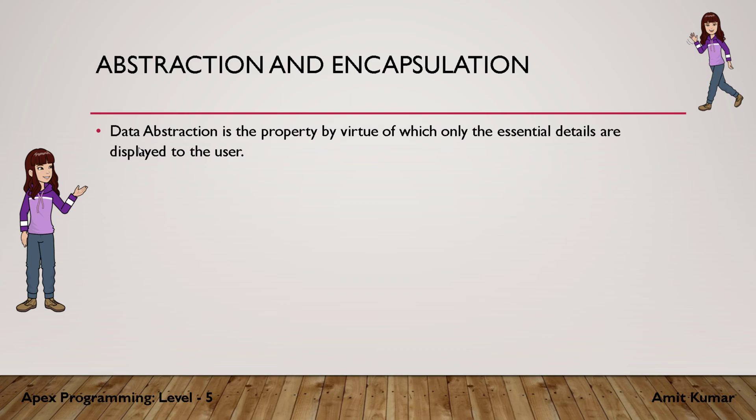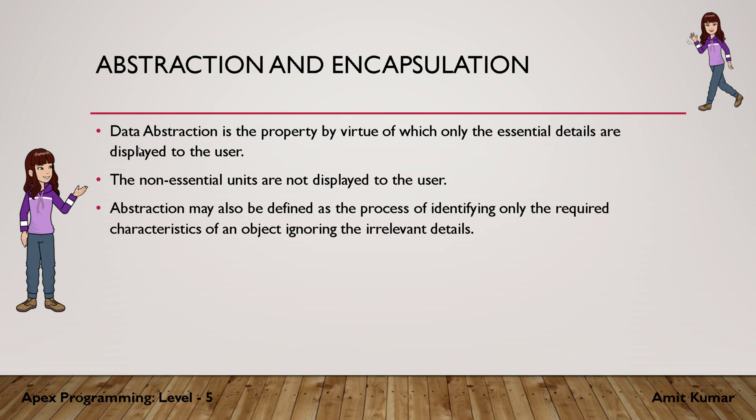Data abstraction is a property by which only the essential details are displayed to the user. The non-essential details are not displayed. Abstraction may also be defined as the process of identifying only the required characteristics of an object, ignoring the irrelevant details. So abstraction means knowing only the essential details about something without considering the background details.